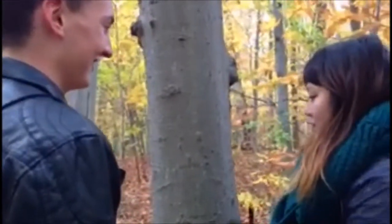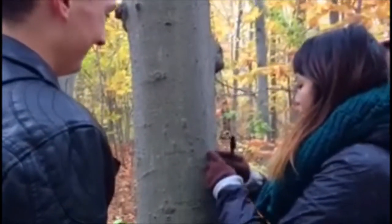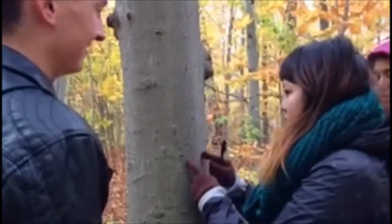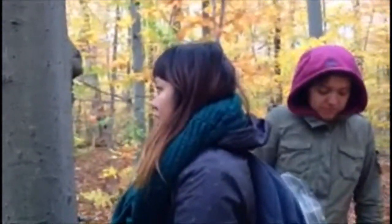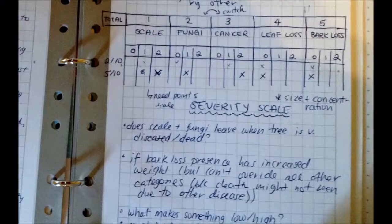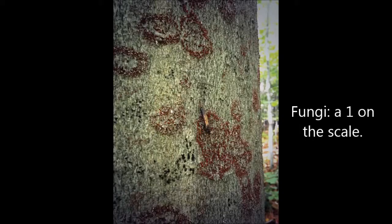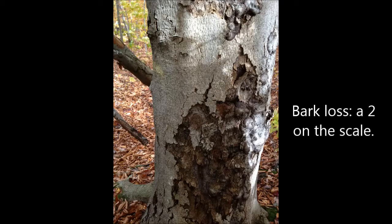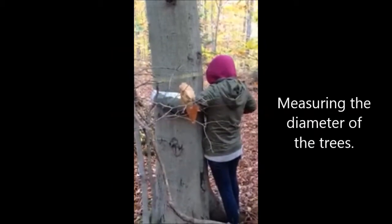After brainstorming and drawing out some rough drafts, we developed a scale for severity based on the presence of the scale insect, neonectria fungi, cankers, leaf loss, and bark loss. No visible presence was marked as 0, any level of presence between 1% and 49% coverage of the tree was marked as 1, and a level of presence between 50% and 100% was marked as 2.